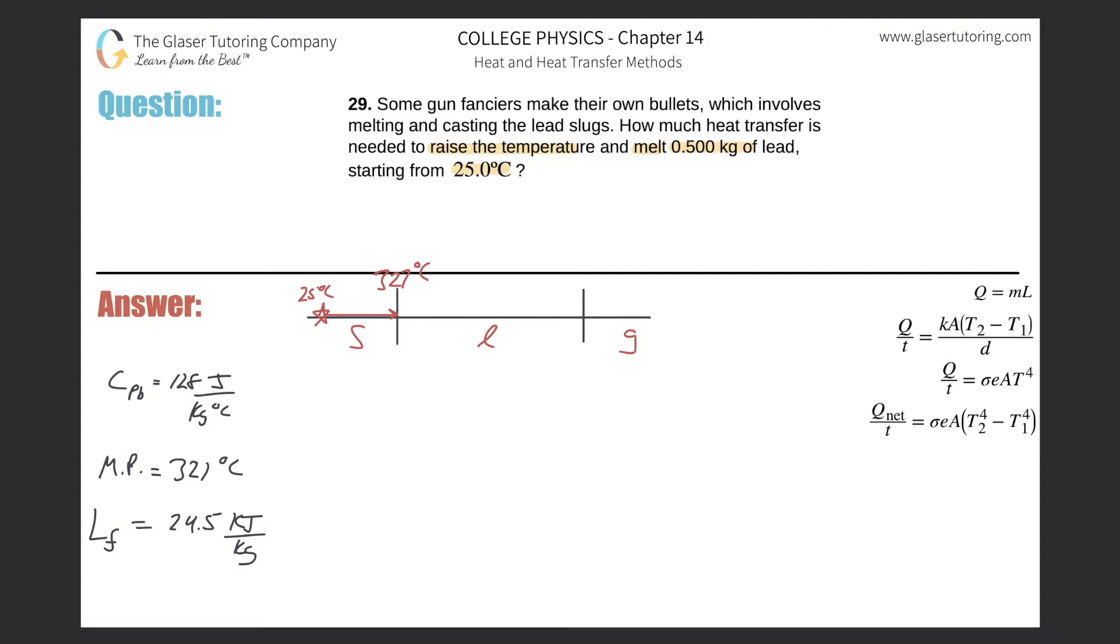So we basically have two things, two calculations. We got to find the heat transfer necessary to go from 25 to 327, and then we have to find the energy necessary to actually melt it. There's two calculations here, and then to find the total, we simply just add them up.